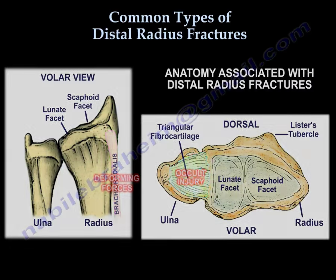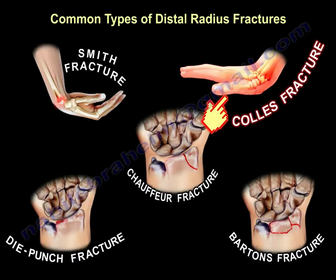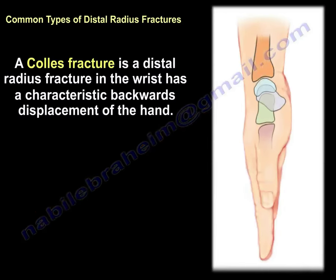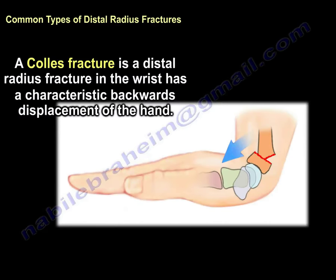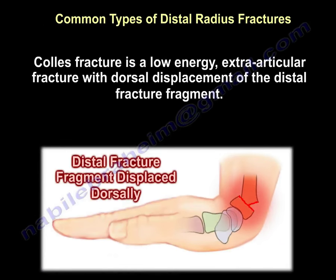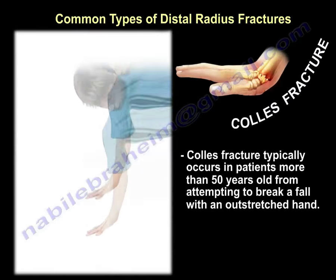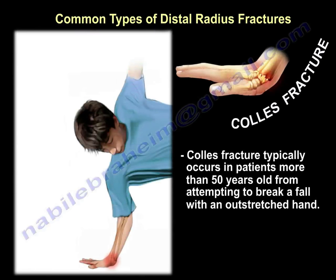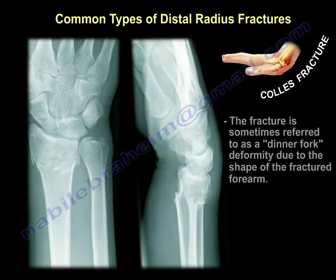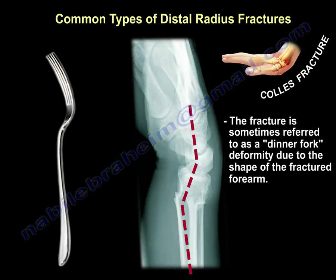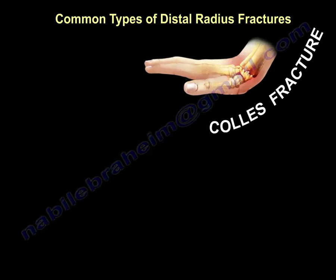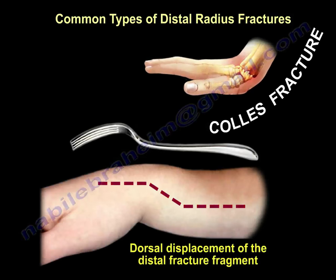The most common type of distal radius fracture is the Colles fracture, which is a fracture of the distal radius with characteristic backward displacement of the hand. It is a low energy, extra-articular fracture with dorsal displacement of the distal fragment. It usually occurs in patients above the age of 50 years when they attempt to break a fall with an outstretched hand. It is sometimes referred to as a dinner fork deformity due to the shape of the fractured forearm, with the dorsal displacement of the distal fragment clearly visible.